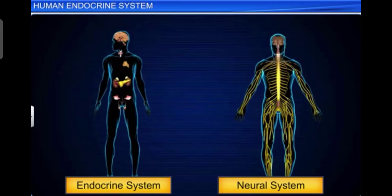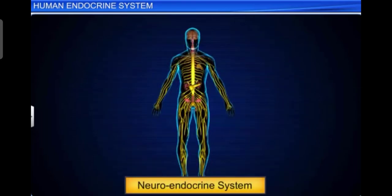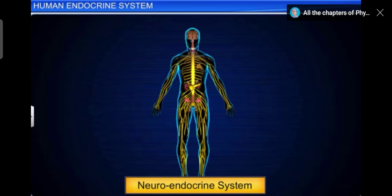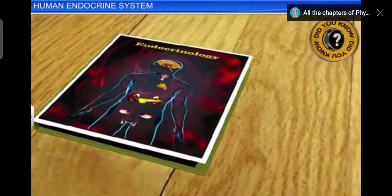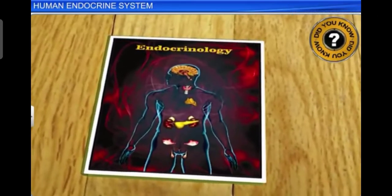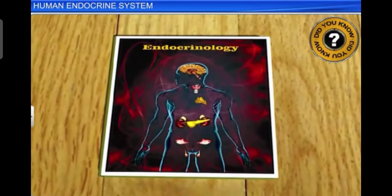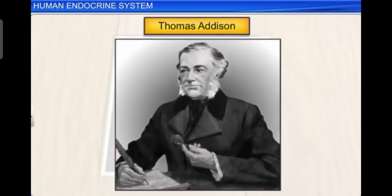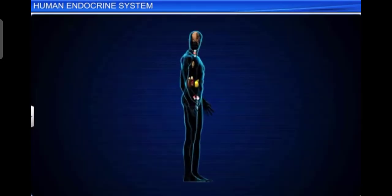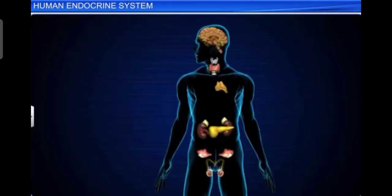The study of this neuro-endocrine system is called neuroendocrinology. Endocrinology is the branch of medicine which deals with the endocrine glands and the action of their hormones. Thomas Addison, an English physician and scientist, is known as the father of endocrinology.